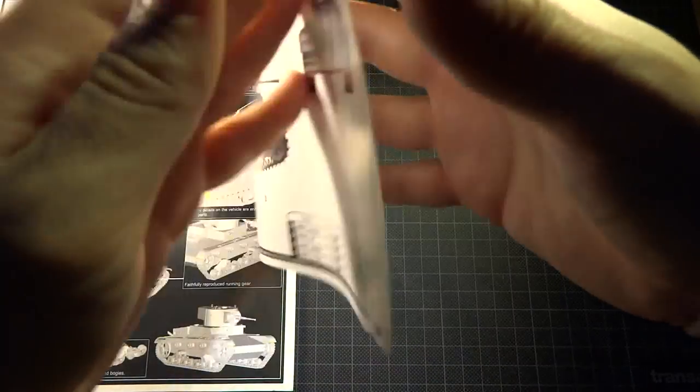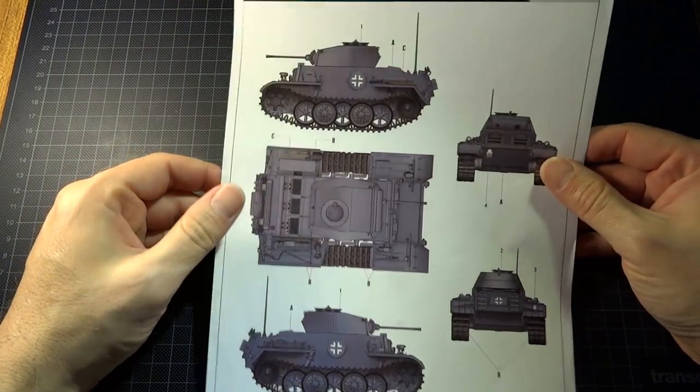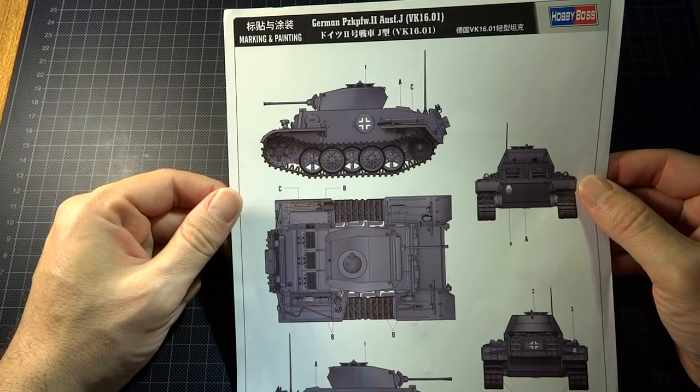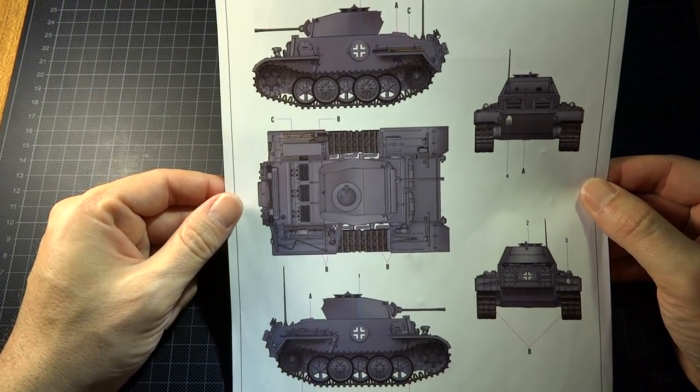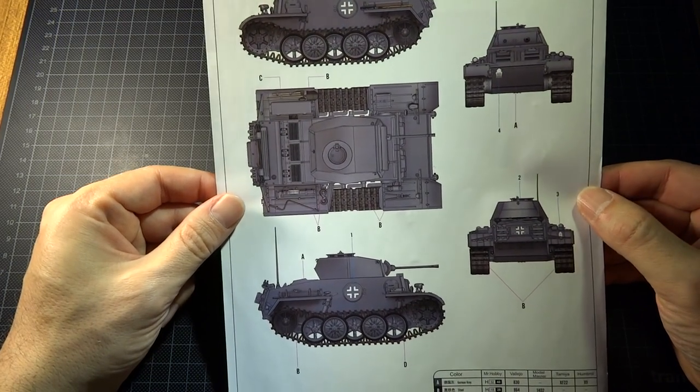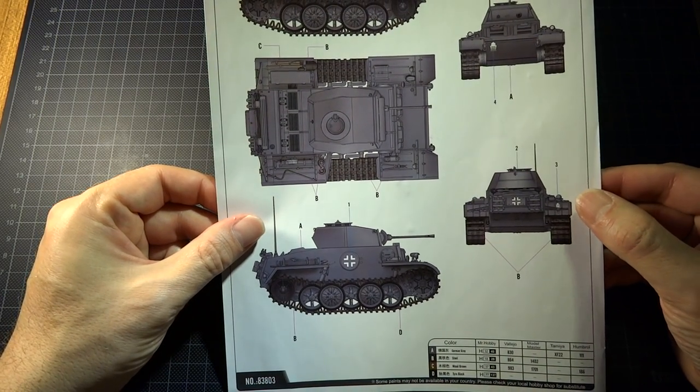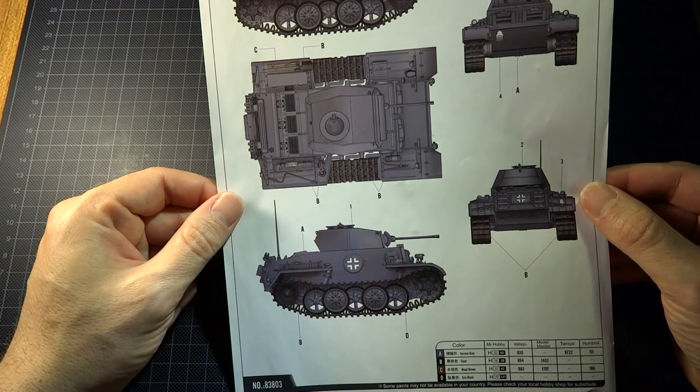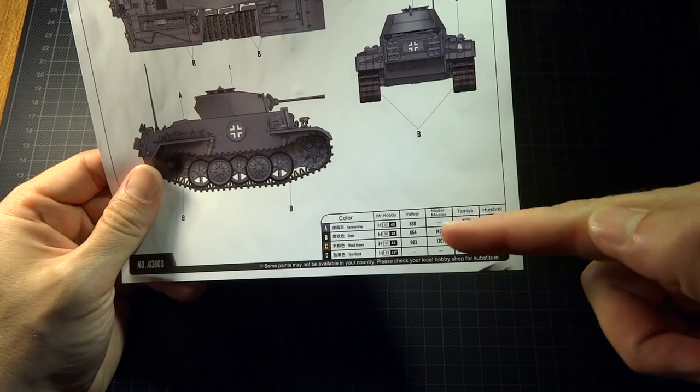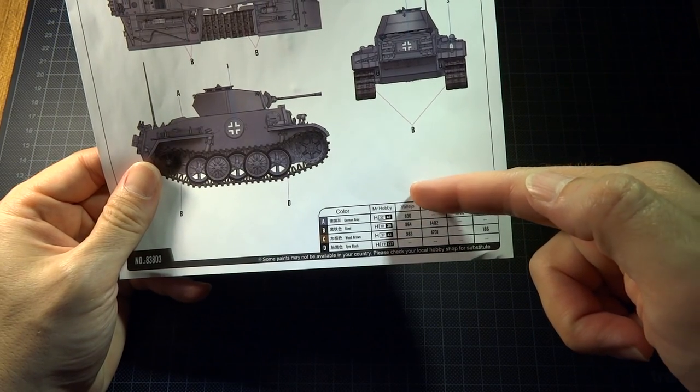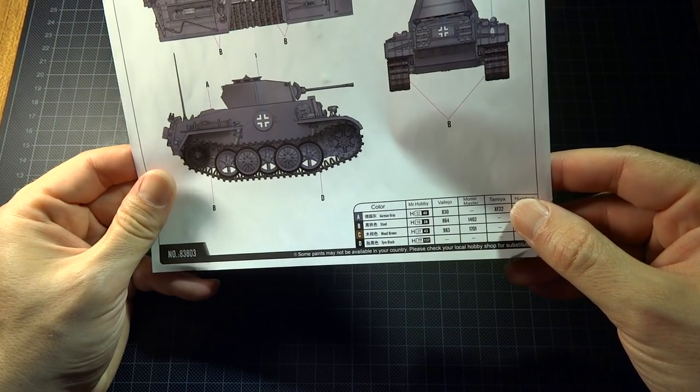First, there's a color sheet for painting. This vehicle was used only in Russia, with only seven assigned to a Panzer Division. Mainly green, there are different color codes for Mr. Hobby, Model Master, Tamiya, and Humbrol: mainly German gray, steel wood brown, and dark black.